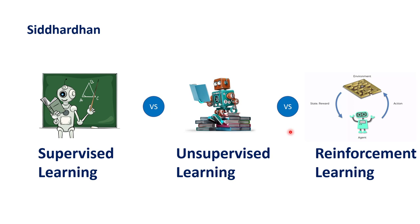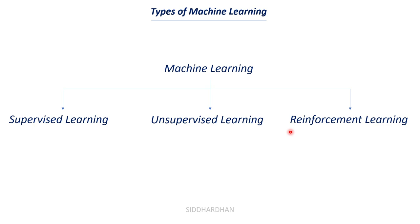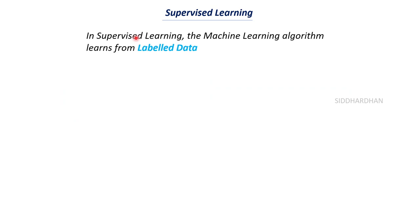Now let's move on to the next topic: the types of machine learning. There are three types: supervised learning, unsupervised learning, and reinforcement learning. In supervised learning, the machine learning algorithm or model learns from labeled data.